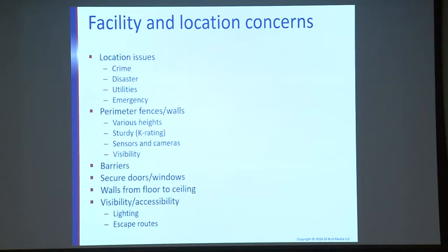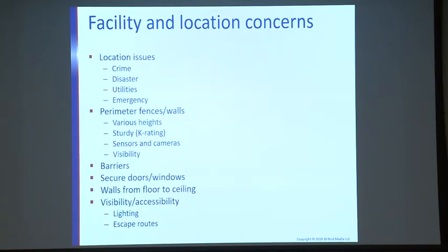Consider whether you're too close to an airport, a military base, or a railroad track. Transportation corridors — railroads and freeways — may carry hazardous materials such as nuclear rods being disposed of, or gas and oil containers. You need to be concerned about disasters that could occur because of your location. Also think about utilities — water, gas, electric — and how close emergency services are, especially when access to your facility requires passing through a gate.